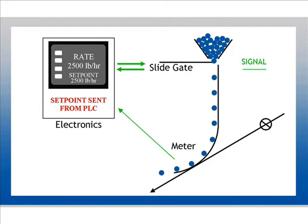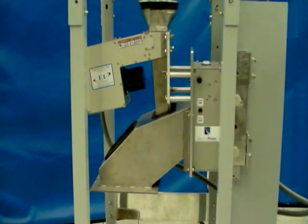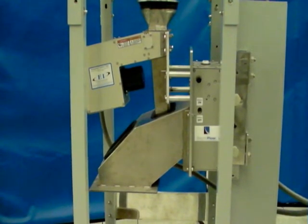This information is used by the electronics to maintain the valve's proper position and to maintain the correct flow rate or total. Set points for either flow rate or total can be sent locally, directly from the HMI, or remotely by PLC.